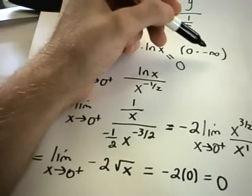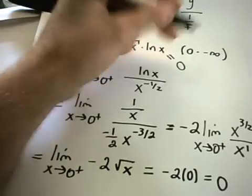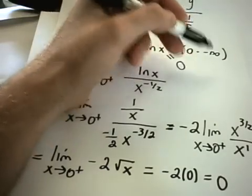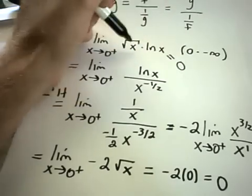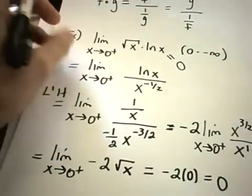And again, be careful. 0 times negative infinity, you can't conclude that it equals 0. All it says is one thing's getting small, one thing's getting big. Well, in this case, the small thing's getting small, I guess, faster. You can think about it that way.